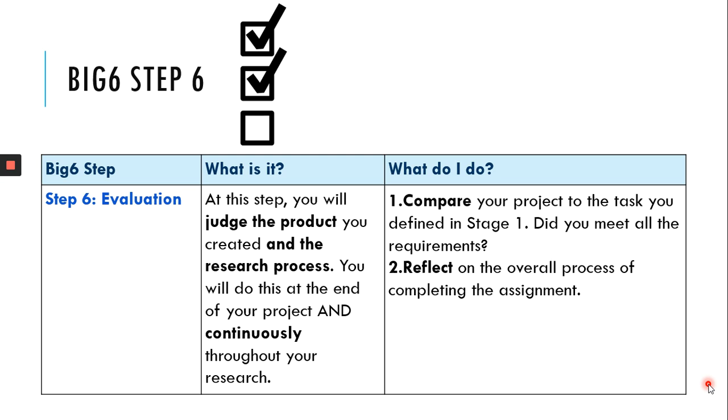So think about comparing your project to the task that you defined in stage one. Did you meet all those requirements? You identified that information task, that information problem at the beginning of this process. So did your project actually meet that problem and solve that problem? And then you're going to reflect on the overall process of completing the assignment.